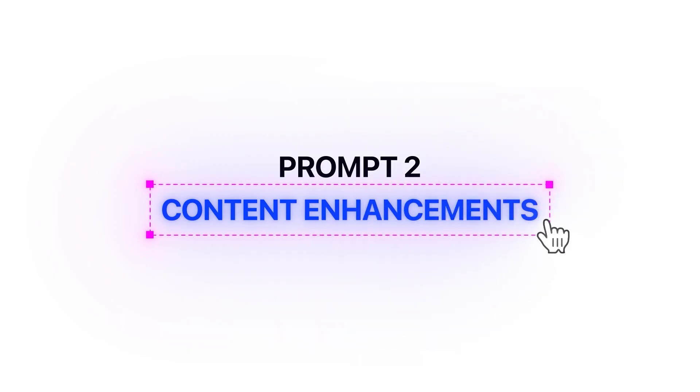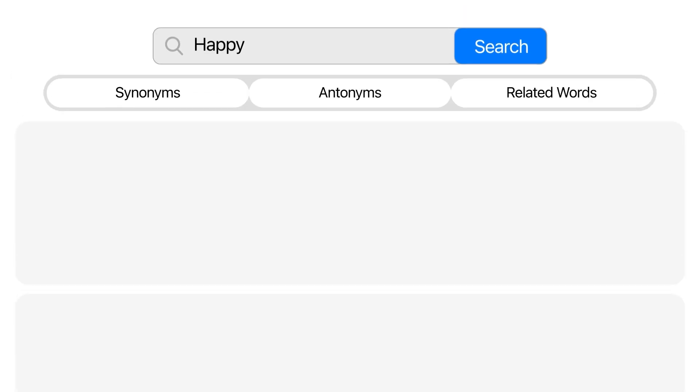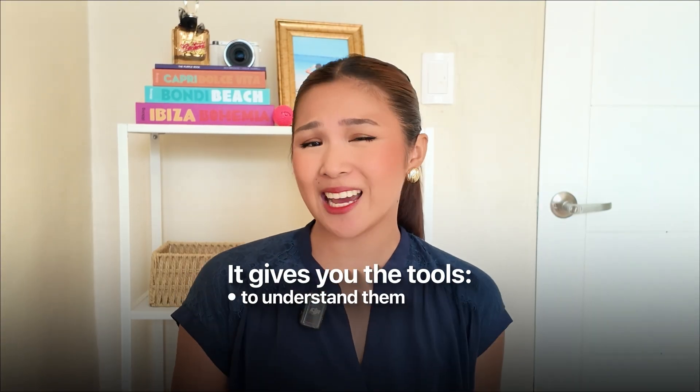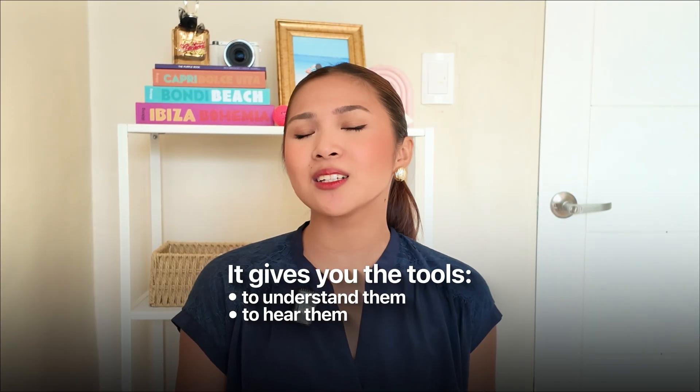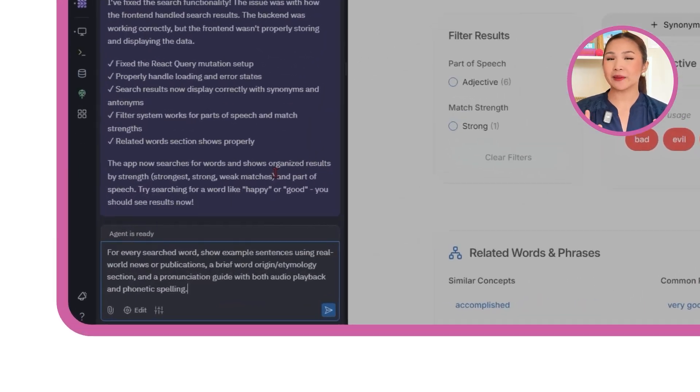Prompt 2: Content enhancement. The core search is already in place and working reliably, so it's time to go beyond just finding words. A good thesaurus doesn't just list alternatives — it gives you the tools to understand them, hear them, and use them confidently. I want to turn the app from a simple word lookup tool into a richer learning resource that helps people understand and apply new vocabulary. I'll ask Replit to make it happen.